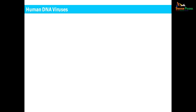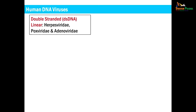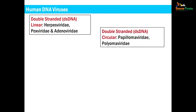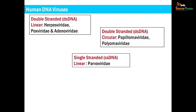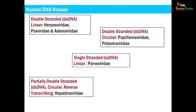The different families of DNA viruses can be grouped depending on the characteristics of their nucleic acid. For example, herpes, pox, and adenoviridae have double-stranded linear DNA. Papillomaviridae and polyomaviridae have double-stranded circular DNA. Parvoviruses have single-stranded DNA. In hepadnaviridae, there is partially double-stranded circular DNA, along with a reverse transcriptase enzyme present with the nucleic acid.